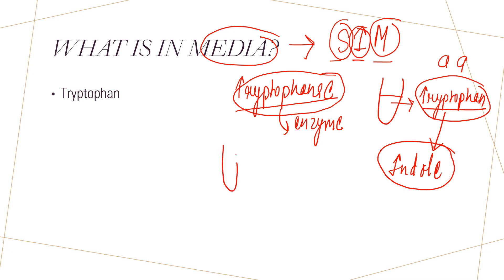First, we take the SIM medium in a test tube and stab the microorganisms into it. After about 18 to 24 hours of incubation, we observe what happens. If the organism is able to produce the tryptophanase enzyme, it will convert tryptophan into indole.